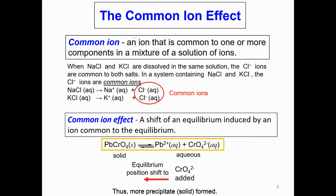So what is a common ion? A common ion is an ion that is common to one or more components in a mixture of a solution of ions. For example, when sodium chloride and potassium chloride are dissolved in the same solution, the chloride ions are common to both salts. In a system containing sodium chloride and potassium chloride, the chloride ions are known as common ions.